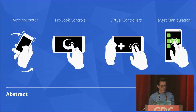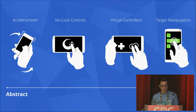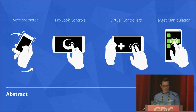Let's look at a spectrum of game controls. Abstract controls interact with the action on the screen via some other mechanism, such as motion or touch anywhere. Virtual controls are somewhere in between — touch something to control something else on the screen. Direct controls occur when you touch the thing you want to interact with directly, like an answer on a trivia game.